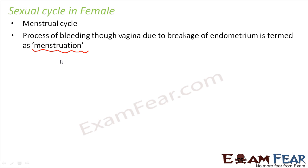Menstruation does not happen from birth because ovulation doesn't happen from birth. Only when the female reaches puberty do the ovaries and reproductive organs mature, and ovulation starts — eggs begin getting released from the ovary. As soon as the egg is released, the uterus starts preparing itself every month to receive the embryo. The uterus will wait for around 14-15 days, and if it doesn't receive the embryo by then, it will break its endometrium and menstrual bleeding will take place.